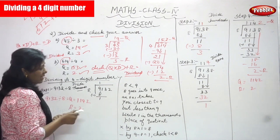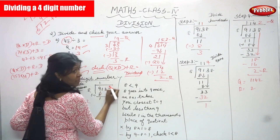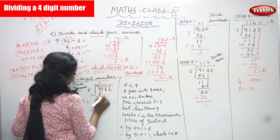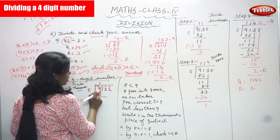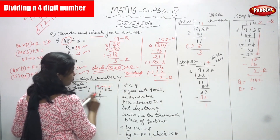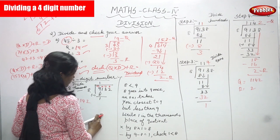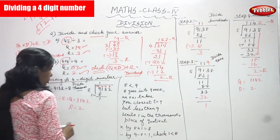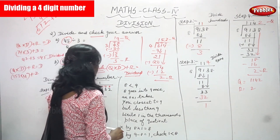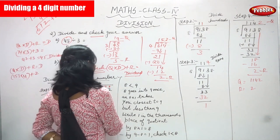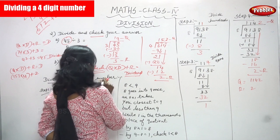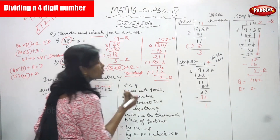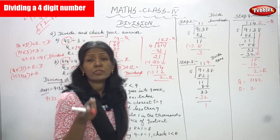Step one: we are going to divide the thousands place. We start with ones, tens, hundreds, and thousands — so we start with thousands. So we have 9 and 8, and we compare: is 9 greater than 8 or not? First we decide which number we are going to take first.